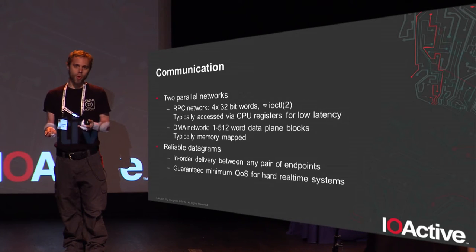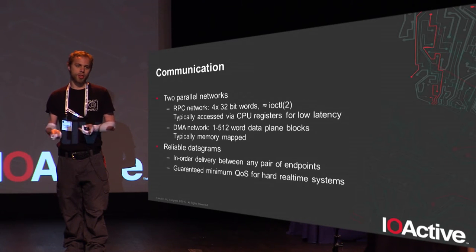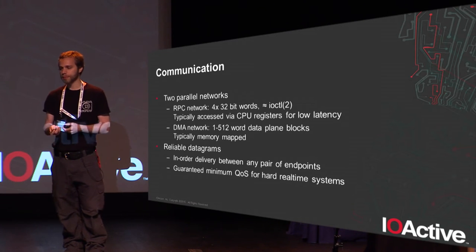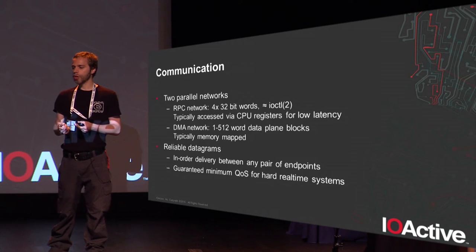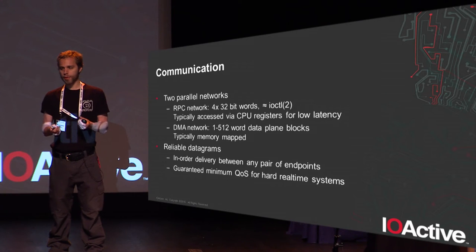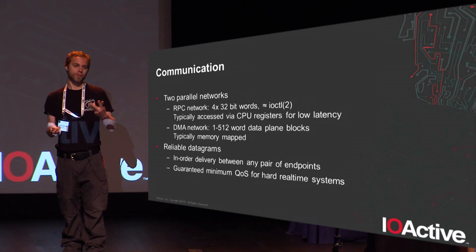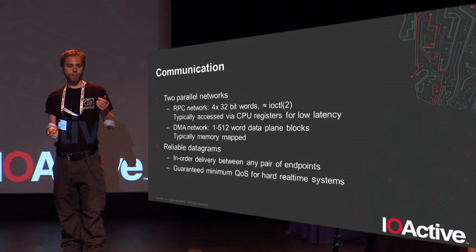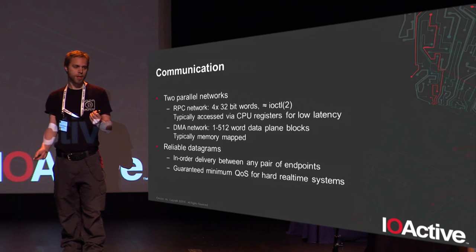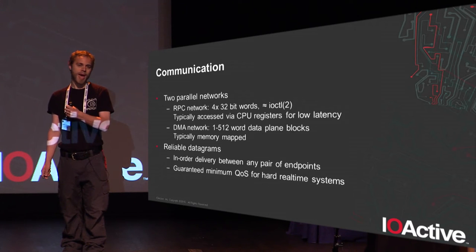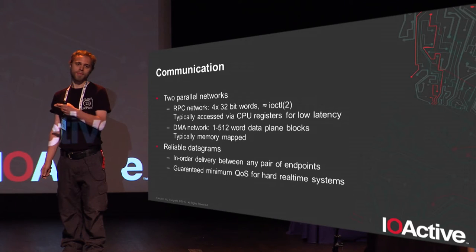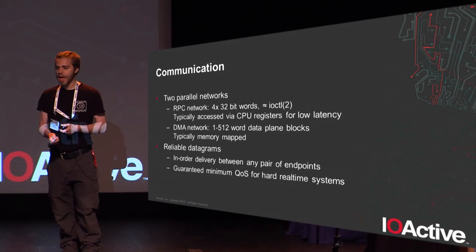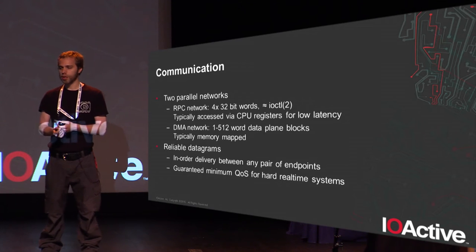While these networks could be merged into one, a lot of the correctness analysis is easier with data plane and control plane separated. Fundamentally, both networks provide reliable datagrams: in-order delivery between any pair of endpoints. There's no guaranteed ordering across different endpoints — congestion can mean one arrives before the other. However, messages from one node to another always arrive in FIFO order. If you need to guarantee ordering, you send a message, wait for acknowledgment, then send the next. I also have guaranteed minimum QoS, so you can do hard real-time: each router guarantees one-fifth of available bandwidth per hop.